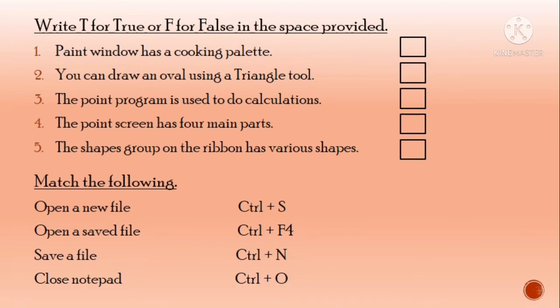Next question, write T for true or F for false in the space provided. Number one, paint window has a coloring palette. Its answer is true. Number two, you can draw an oval using a triangle tool. Its answer is false. Number three, the paint program is used to do calculations. Its answer is false. Number four, the paint screen has four main parts. Its answer is true. Number five, the shapes group on the ribbon has various shapes. The shapes group has different shapes, so its answer is true.